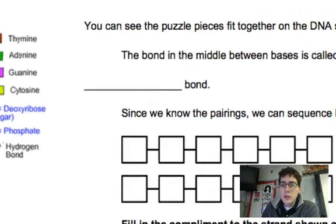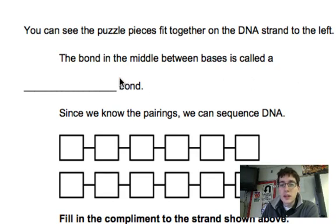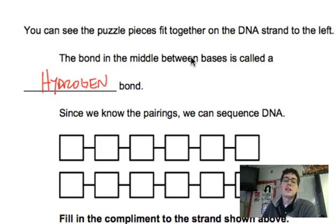We can see the puzzle pieces fit together in the DNA strand on the left, and the bond in the middle is specifically called a hydrogen bond, and it's a specific type of bond, and it's not quite as strong as something called a covalent bond. It's more of an attraction. When adenine and thymine get together, they form this little attraction called hydrogen bond that holds it together.